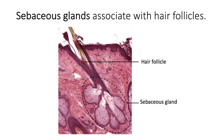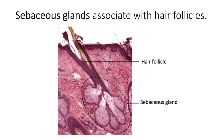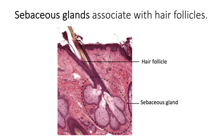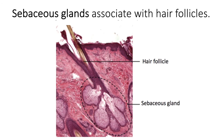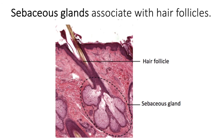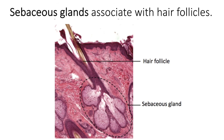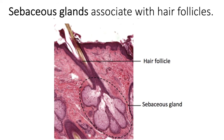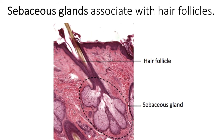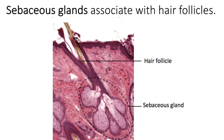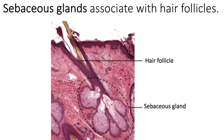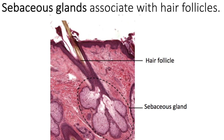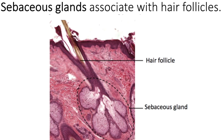The other kind of gland in the skin is the sebaceous gland. Sebaceous glands produce sebum and they sit along a hair follicle, releasing that sebum onto the hair follicle, which lubricates it. These glands, along with the apocrine glands, become active during puberty.